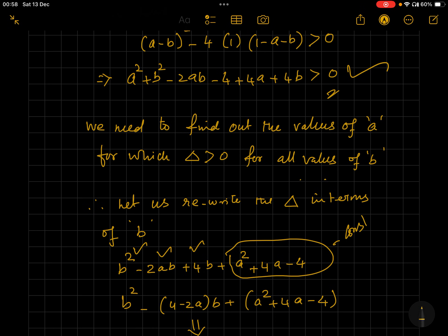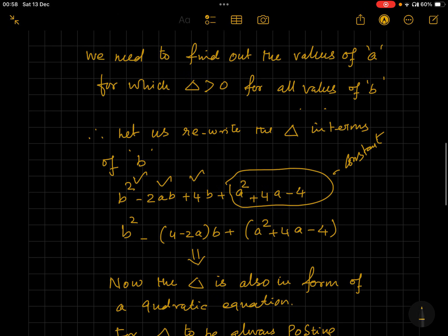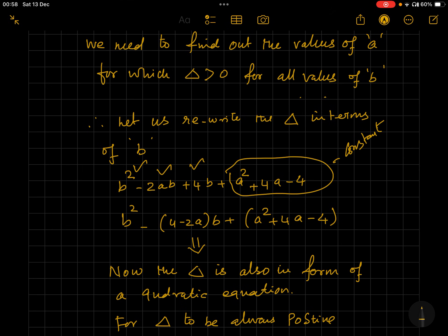Other things are constant which are not in terms of b. So let's further group it: b² - 2ab + 4b + (a² + 4a - 4). Now it is in the form of ax² + bx + c, and here is the real trick or beauty. See, now this is the discriminant, the Δ of the given equation.